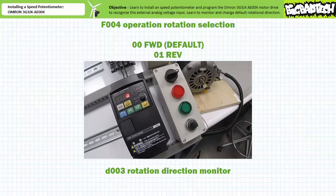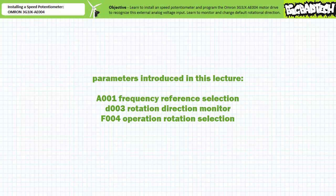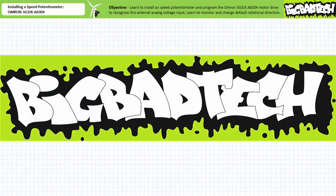That's about it for this quick application exercise. We learned to install an external speed potentiometer in an example motor drive, program the drive to recognize this external analog voltage input, monitor rotational direction, and change default rotational direction. Remember to review these concepts as often as you need to really drive it home — imagine how well lab will go if you know what you're doing. Thank you very much for your attention and interest. We'll see you again during the next lecture of our series. Remember to tell your lab partner about this resource, and be sure to check out the Big Bad Tech channel for additional resources and updates.